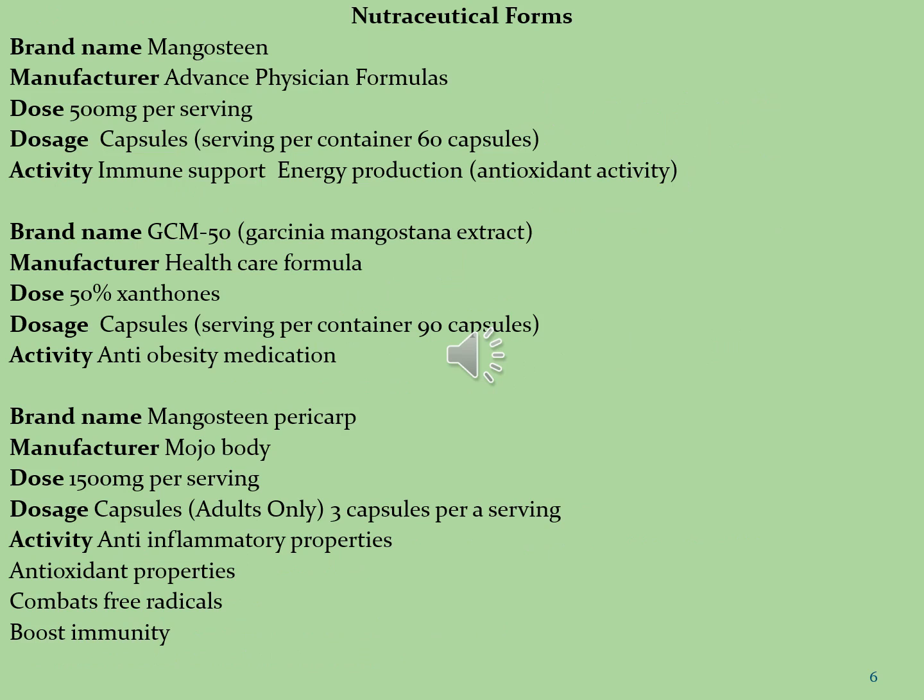Now we discuss some important pharmaceutical brands in which phytoconstituents from the xanthone category have been formulated. The first brand is Mangostin, manufactured by Advanced Physician Formulas, with a dose of 500 mg per day. It is formulated in capsule dosage form, serving 60 capsules per container. This brand is used as an immune system enhancer, for energy production, and antioxidant activity.